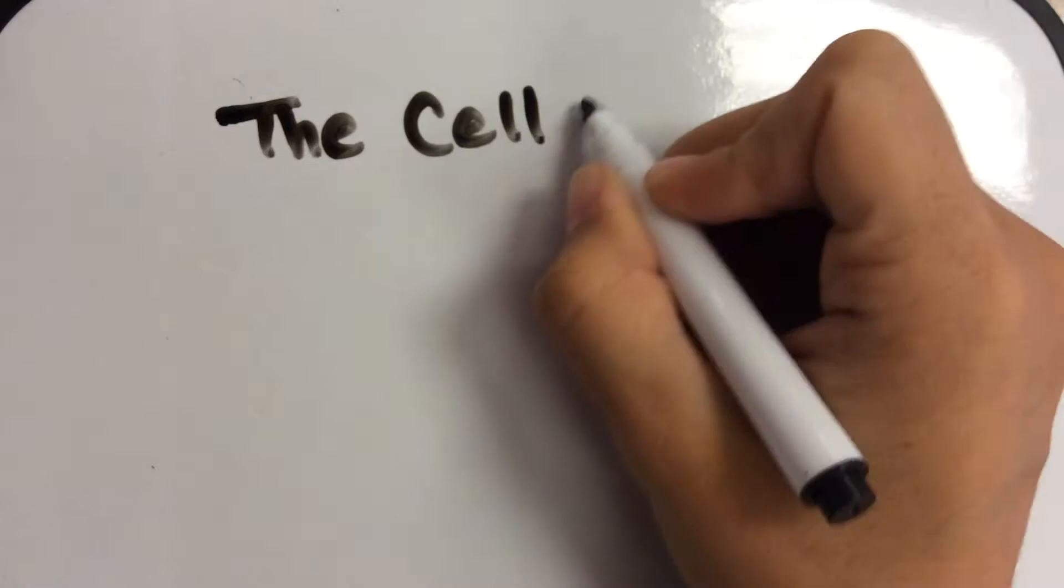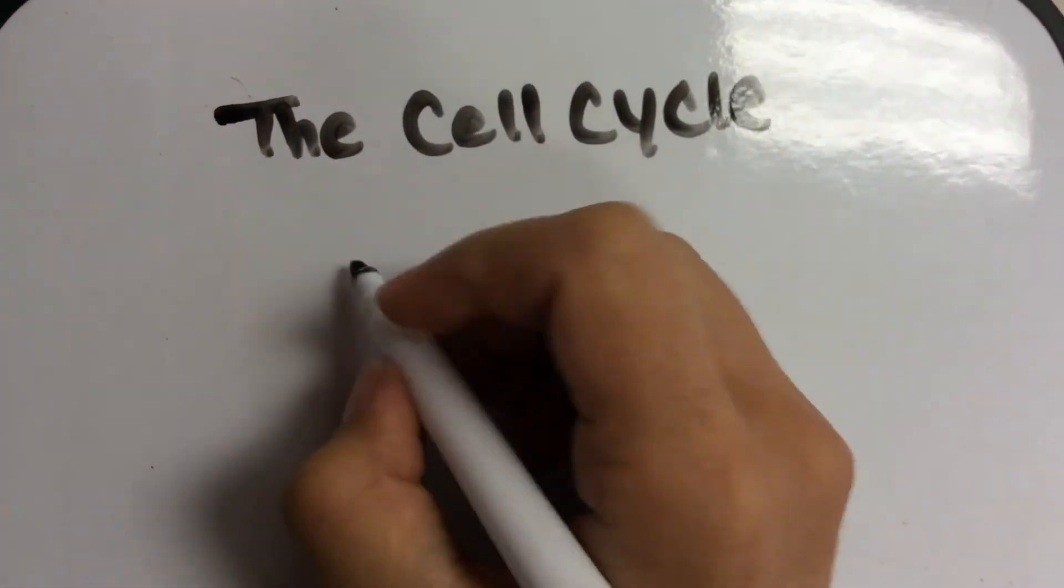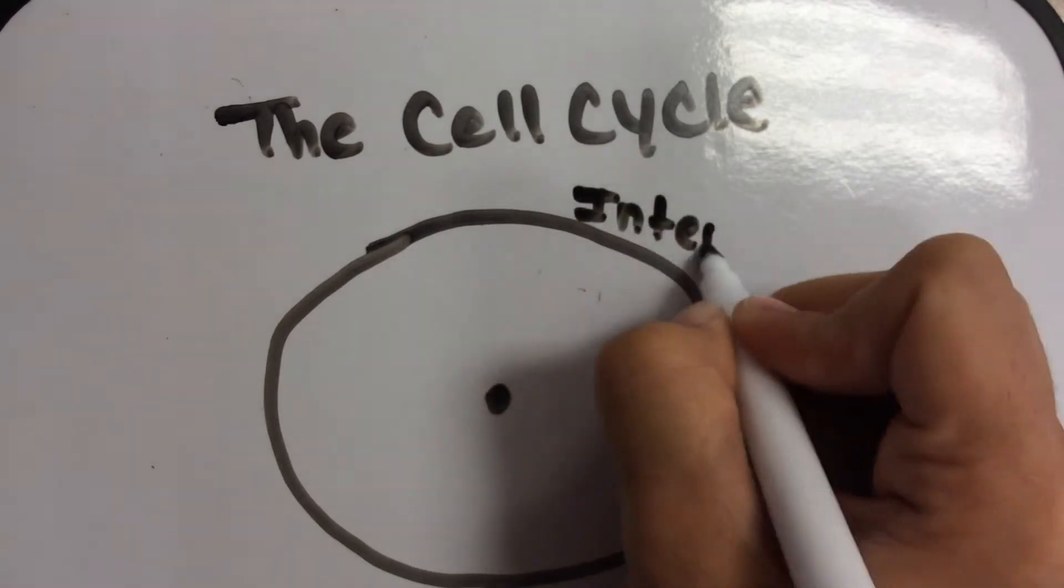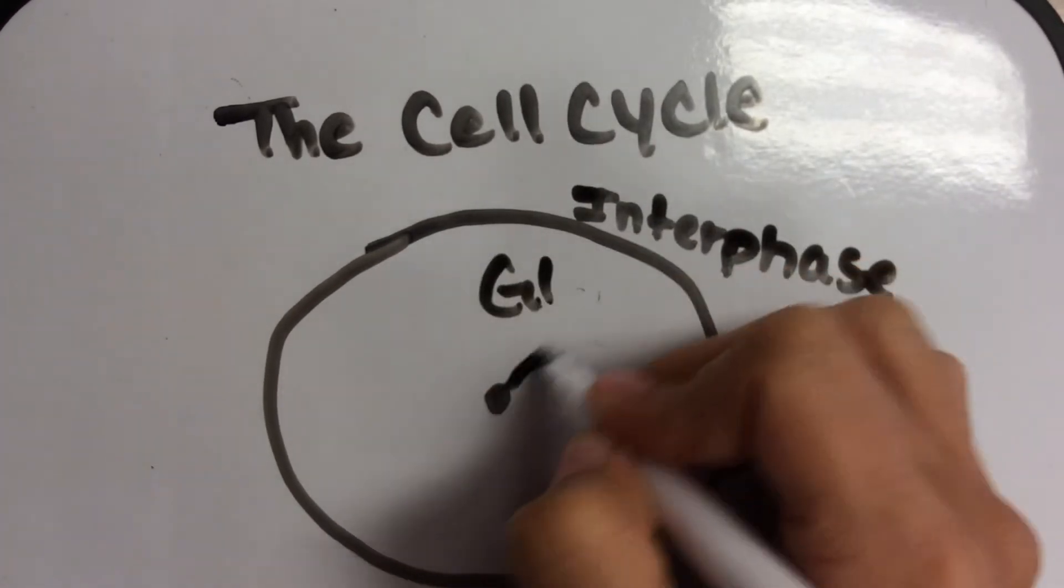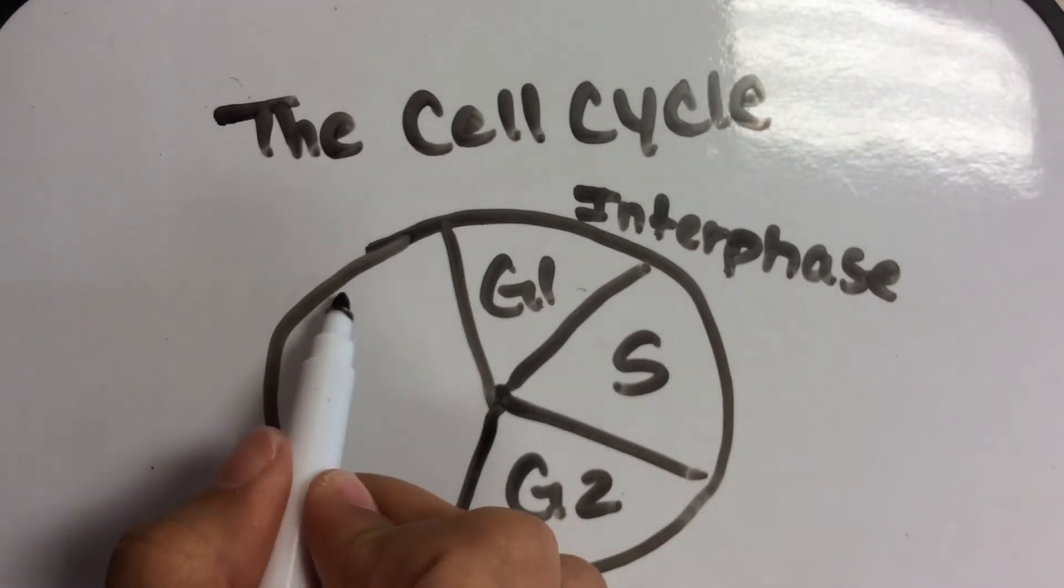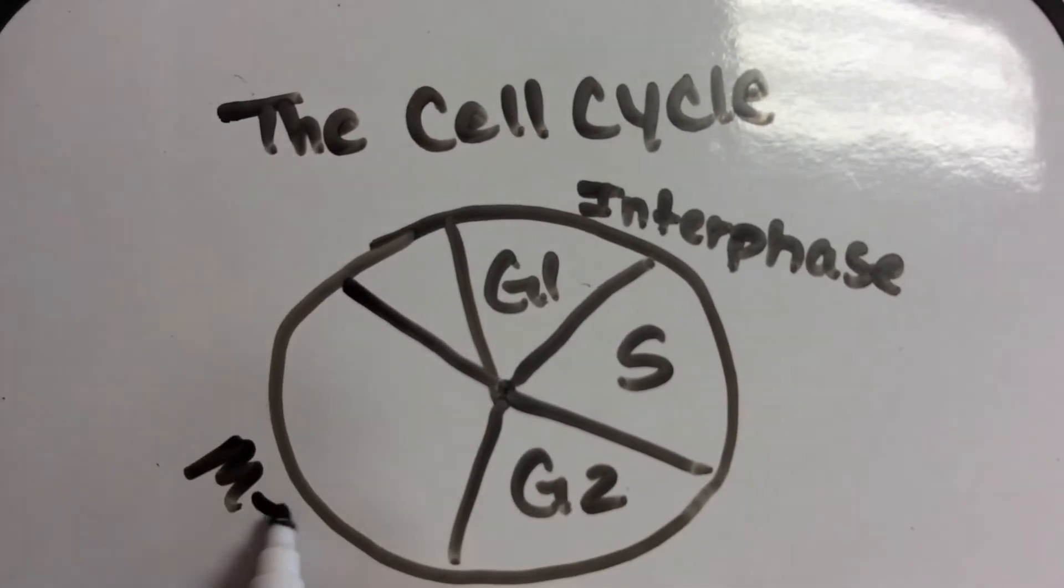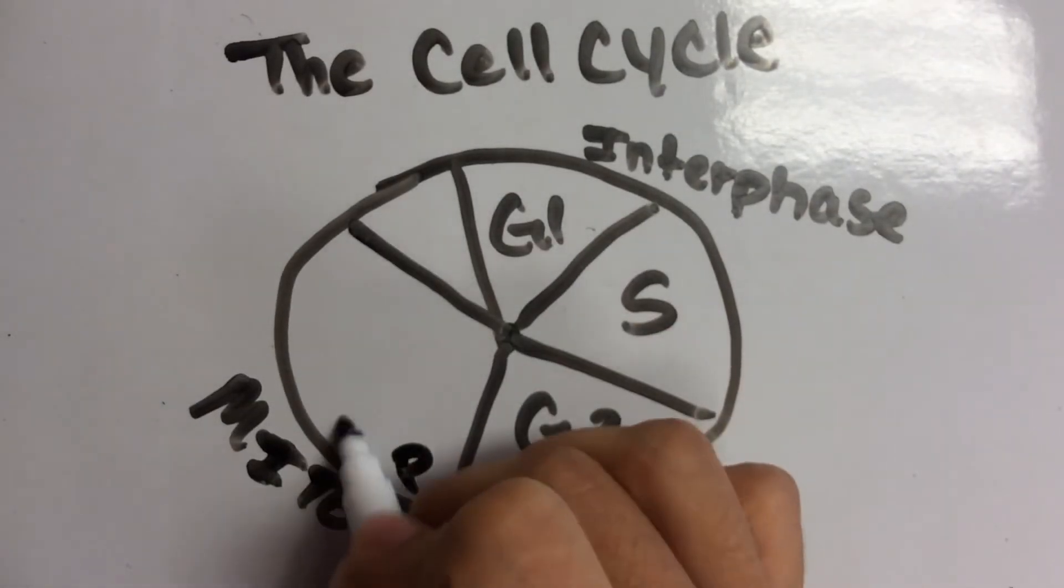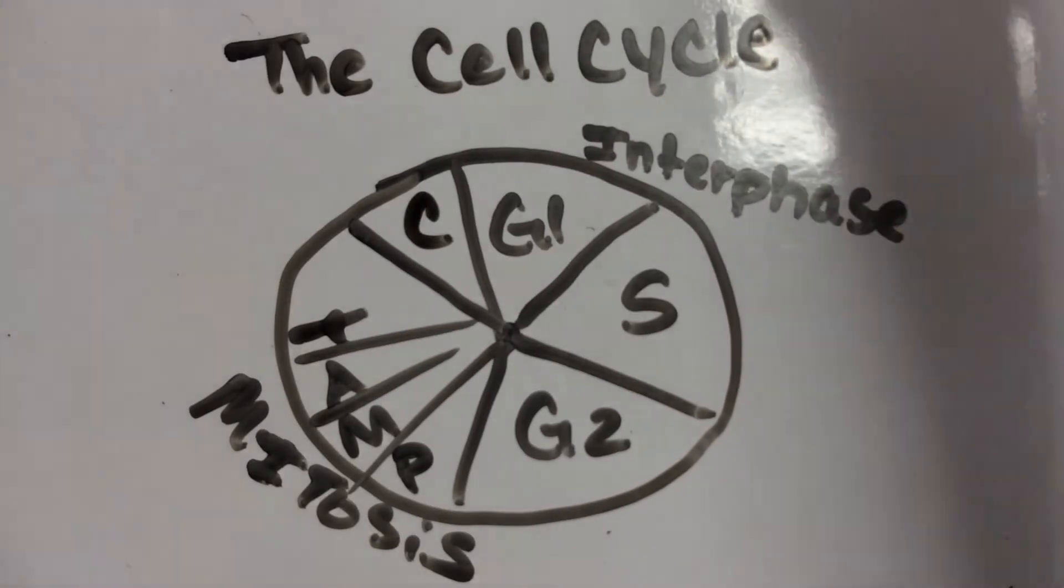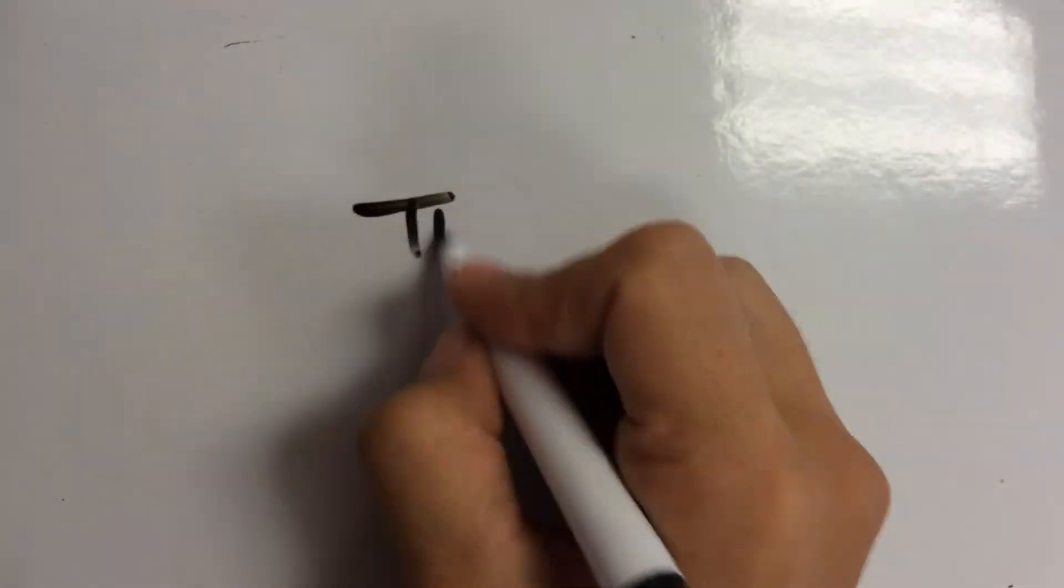And this is your cell cycle. To review, you have a circle. And in this circle, you have interphase. And the three phases of interphase are G1, S, and G2. Then, you have your M phase, or mitosis, which is where the division actually occurs. PMAT, so that you can remember the phases. Then, C for cytokinesis. The end.